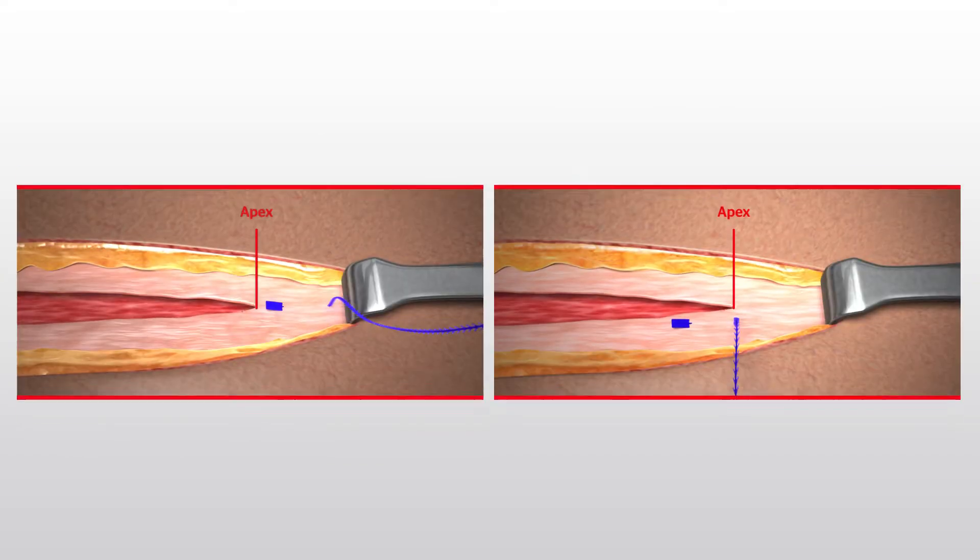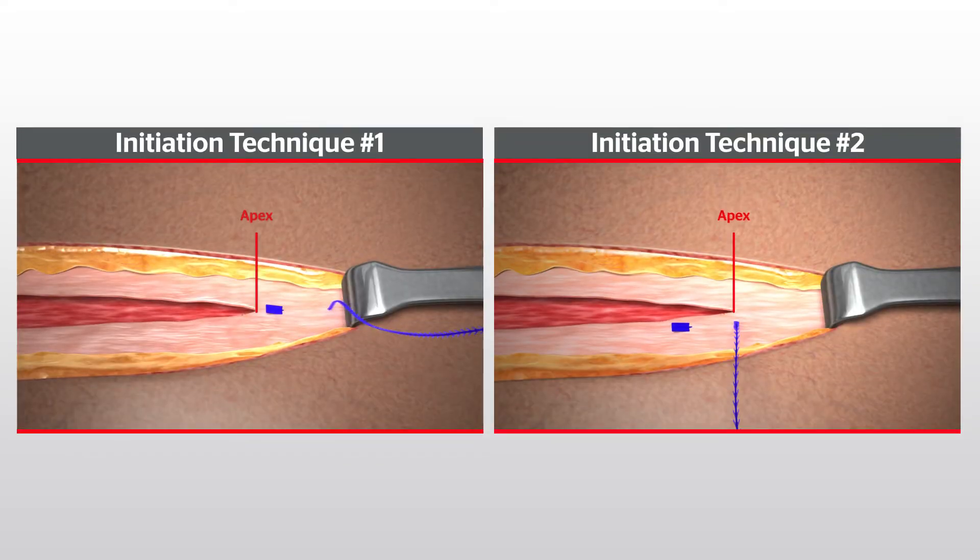Stratafix Symmetric PDS Plus device is used in a continuous suturing pattern without the need for knots to anchor the suture at the beginning and end of the closure. There are two options for where to seat the tab when initiating the closure.